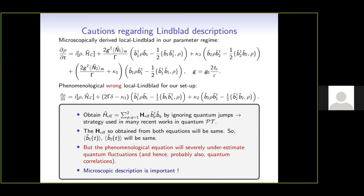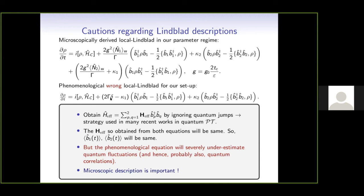Question: Do quantum jumps affect observables? Answer: If you look only at the expectation values of b1 and b2, then quantum jumps will not affect those. But if you look at occupations, they will definitely be affected by quantum jumps — that's the point. If you look at expectation values of b1 and b2, both equations give the same result. But for occupations, these two give very, very different results — that's what is shown here.